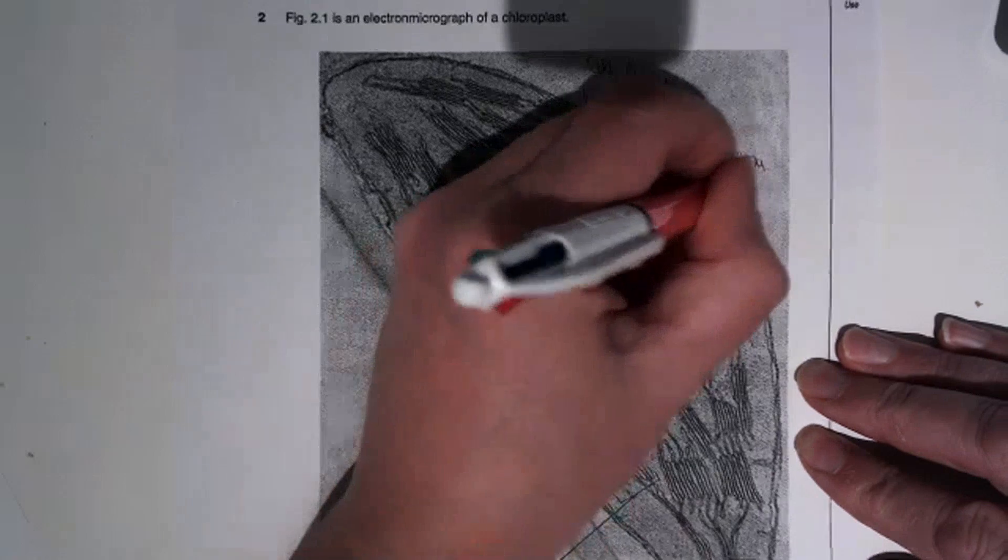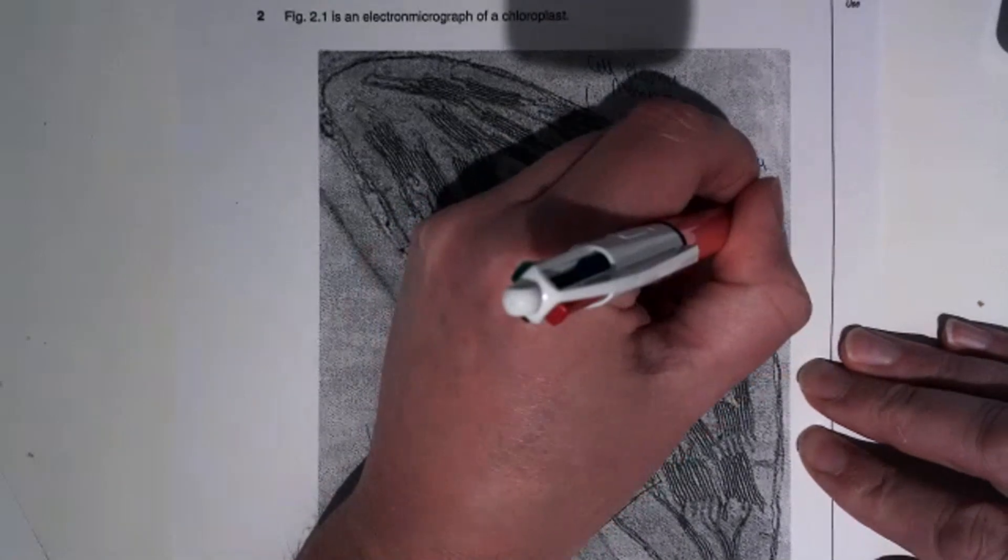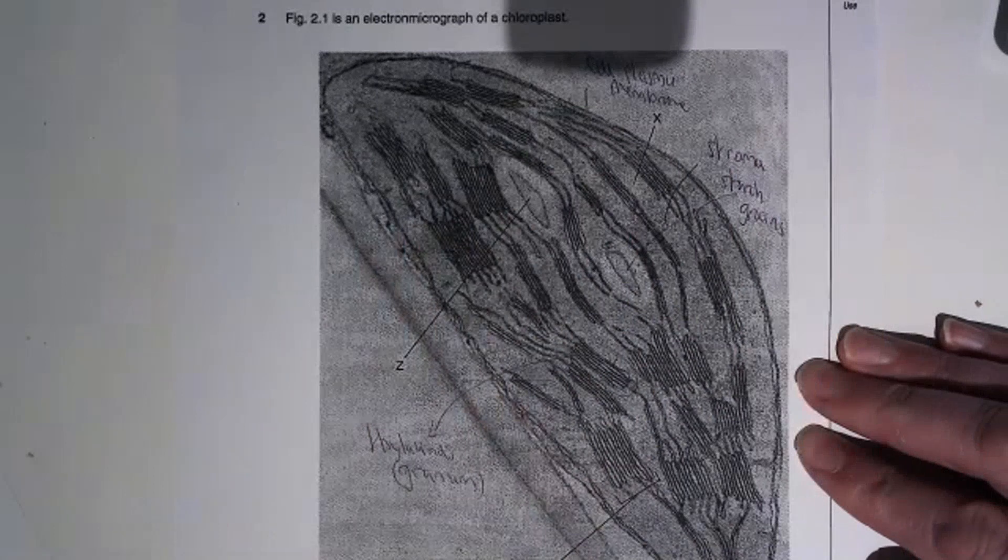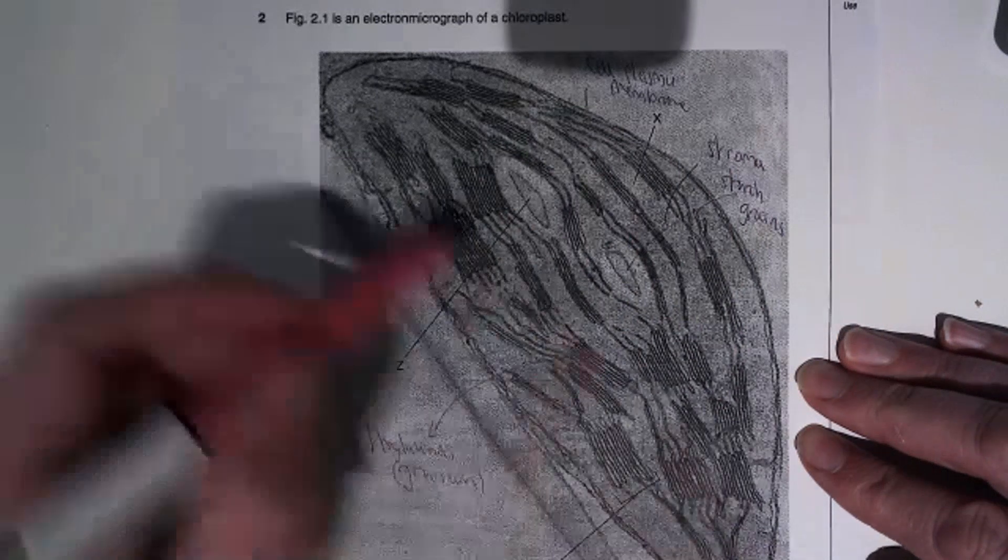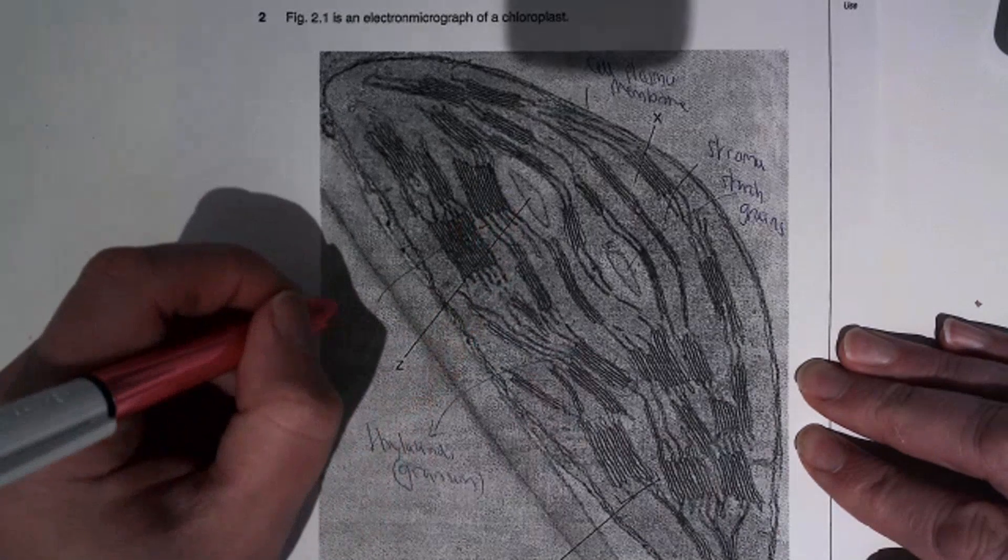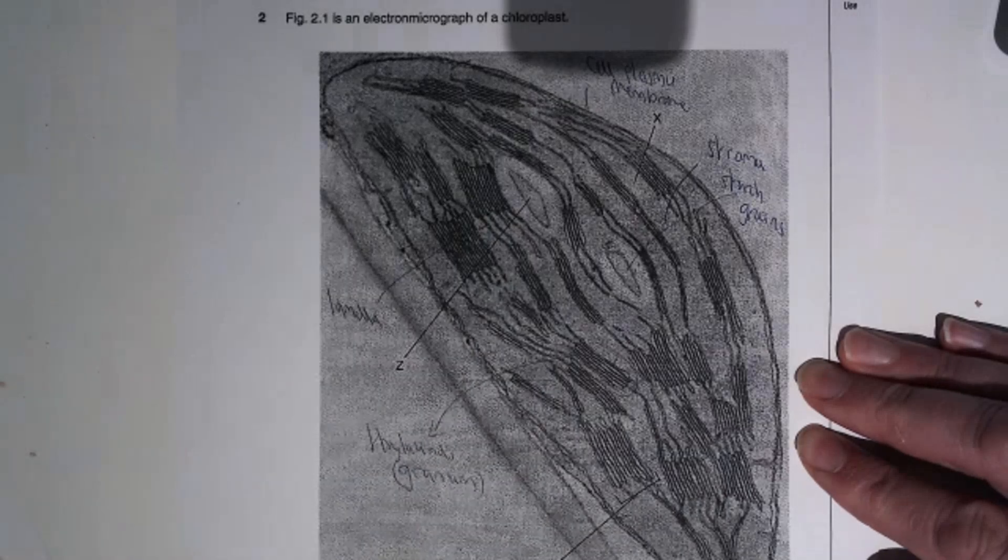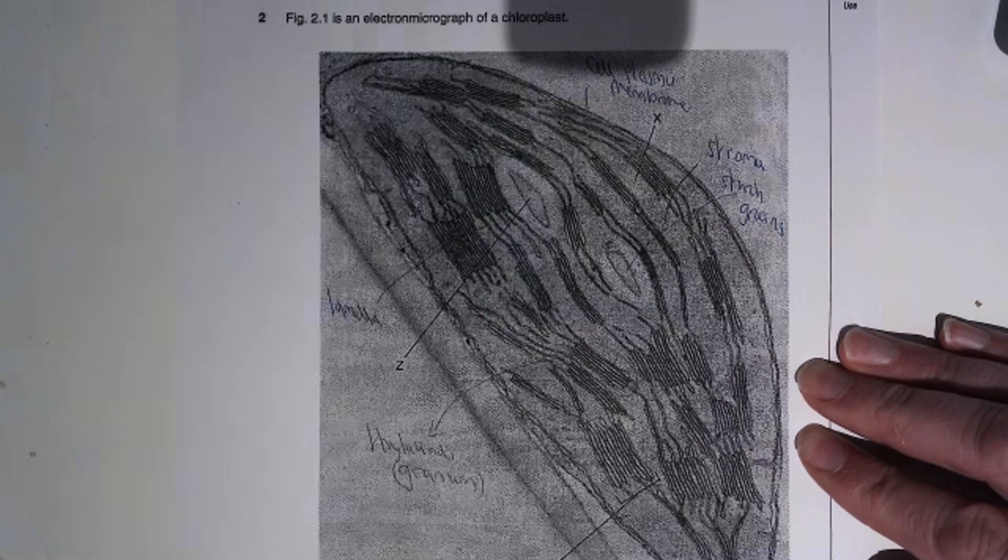We've got these structures here, these are starch grains. The glucose will be converted to starch. And then we've got connections between these granum which are called the lamella. So they're the main structures of a chloroplast that you've got to know.